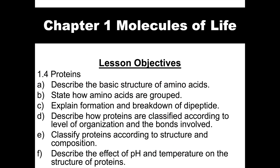These are the lesson objectives that you need to complete after you have finished learning about proteins. Firstly, you need to be able to describe the basic structure of amino acids. Secondly, you need to be able to state how amino acids are grouped, and explain the formation and breakdown of dipeptide. You need to describe how proteins are classified according to level of organization and the bonds involved, and classify proteins according to structure and composition. Lastly, you need to be able to describe the effect of pH and temperature on the structure of proteins.